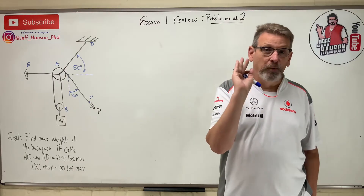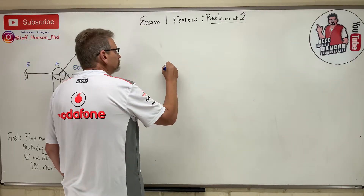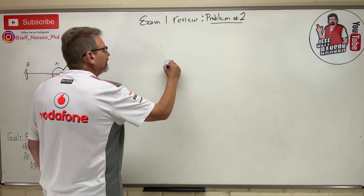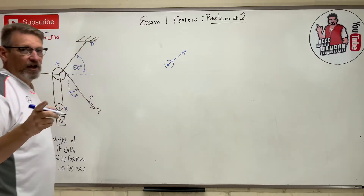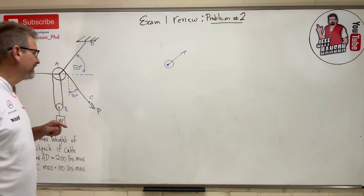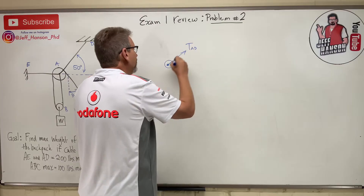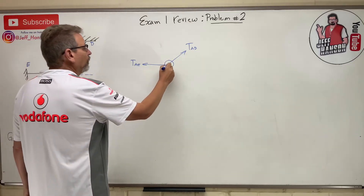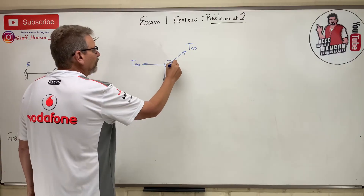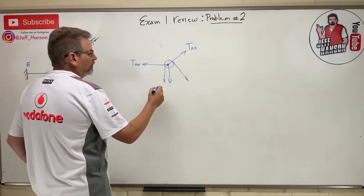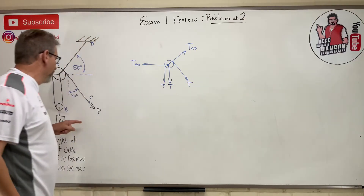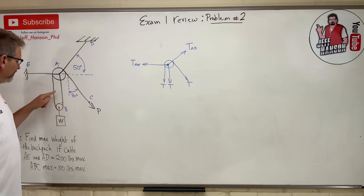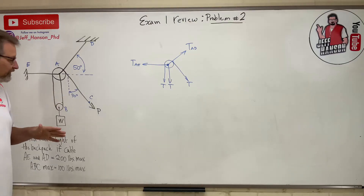Step one: draw a free body diagram. The point I want to go after is point A. Point A has all kinds of business going on. I'll draw the little pulley. Remember, cables are dumb — they only know how to pull. You can't have a magic pushing rope; they're always in tension. So here's T_AD, T_AE, and then the rope going around the pulley. The tension is the same on both sides because these are frictionless pulleys.